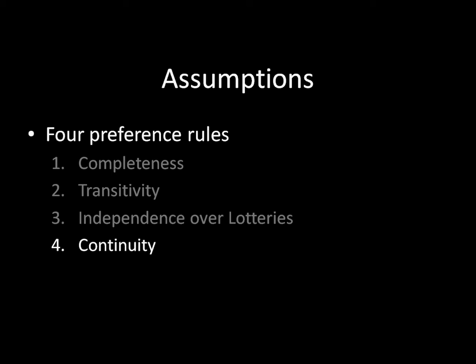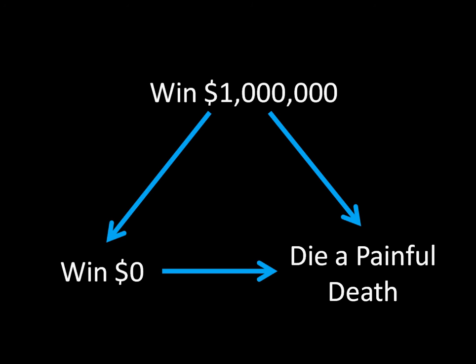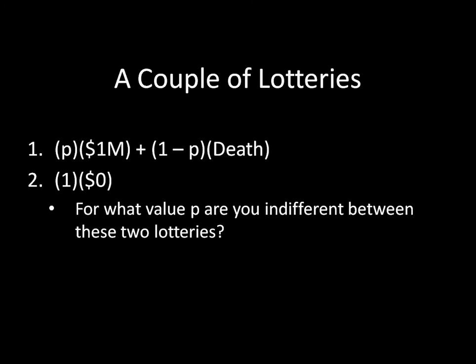Like independence before it, continuity has to do with lotteries. Let's start off by first looking at a set of preferences over outcomes with certainty — our good old friend: a million dollars, zero dollars, and dying a painful death. Here you prefer winning a million dollars to winning zero dollars to dying a painful death. These are rational and sensible preferences. Consider these two lotteries: Lottery one gives you one million dollars with probability p and a painful death with probability one minus p. Lottery two is a degenerate lottery — it awards you zero dollars with certainty.